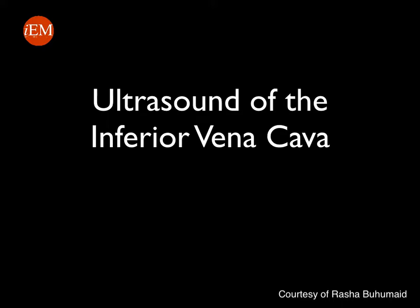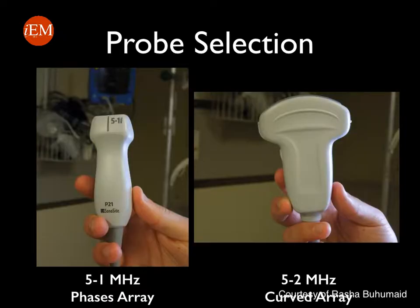In this tutorial we will be discussing the use of point-of-care ultrasound to evaluate the inferior vena cava. The probe you're going to use is either the phased array probe or the cardiac probe, or you can use the curved or abdominal probe to perform this study.